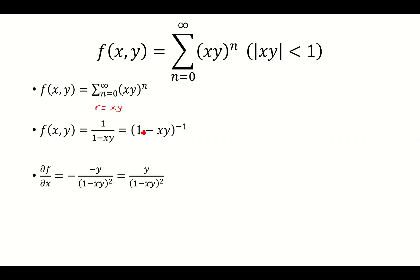The derivative of 1 is 0. Because I'm taking the derivative with respect to x, y is a constant. So the derivative of negative xy is just negative y. The two negatives turn into a positive, so that is y over (1 minus xy) squared.